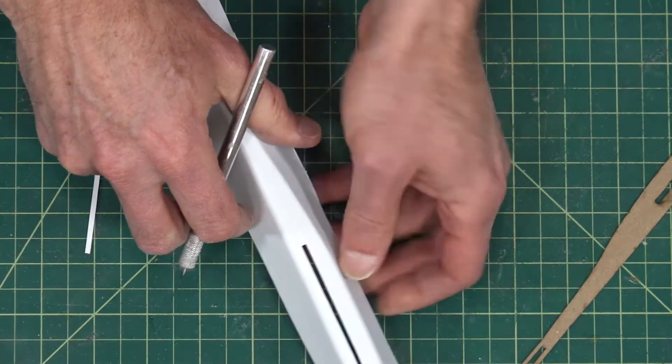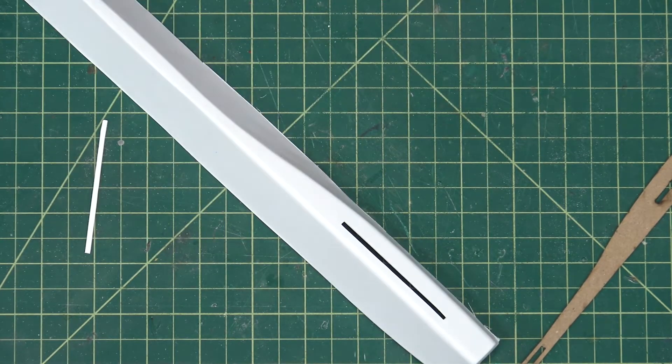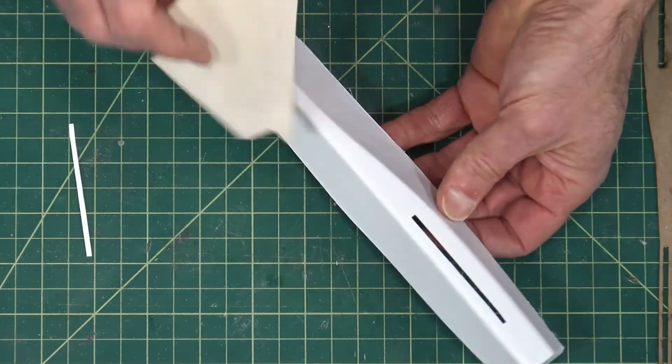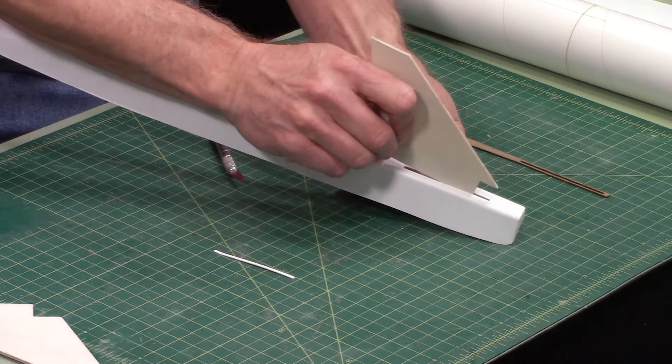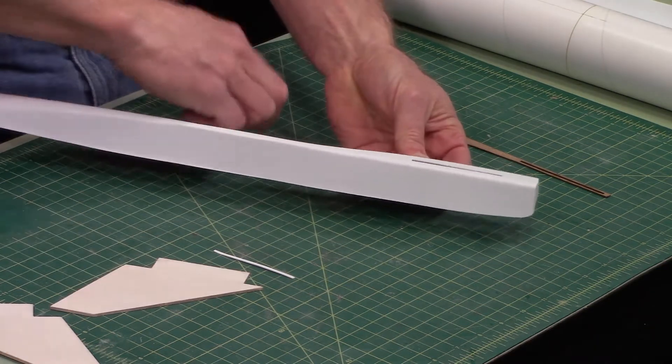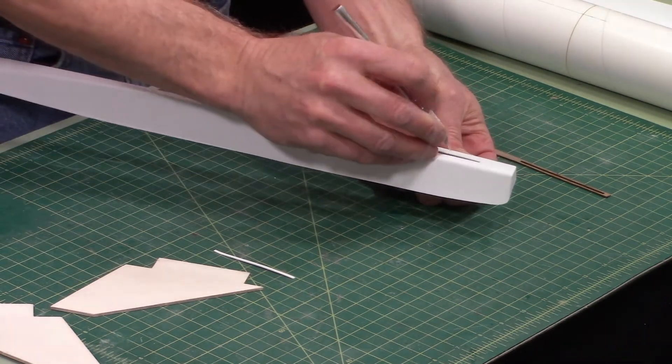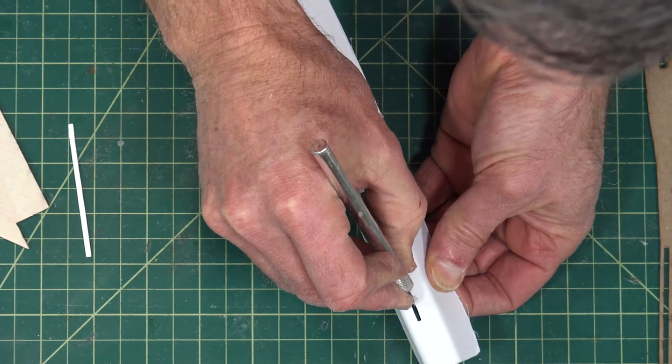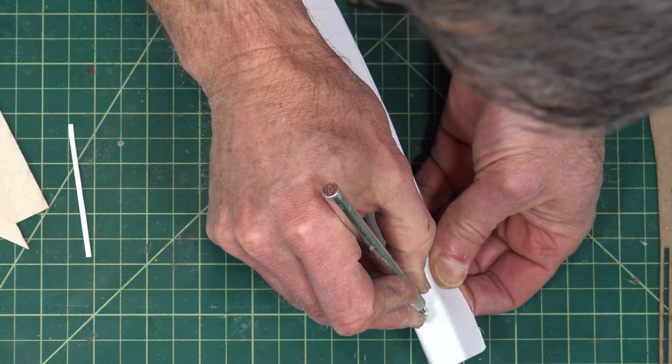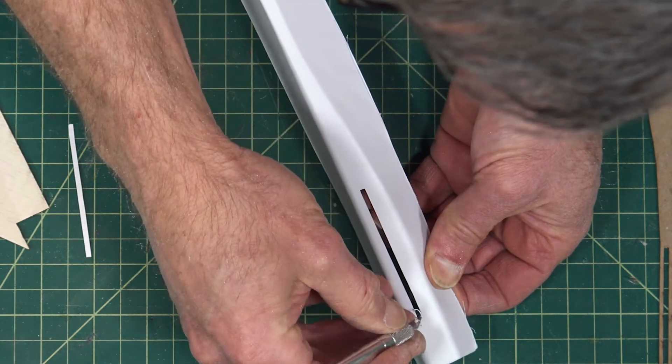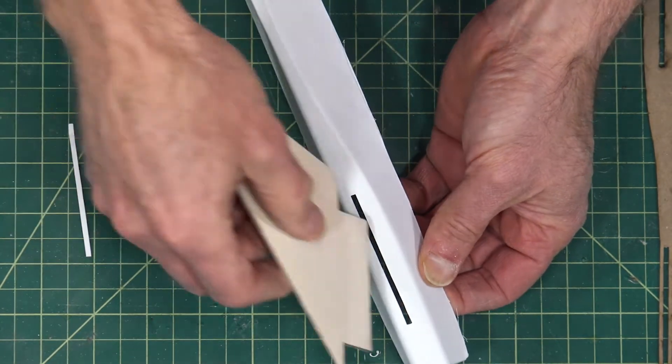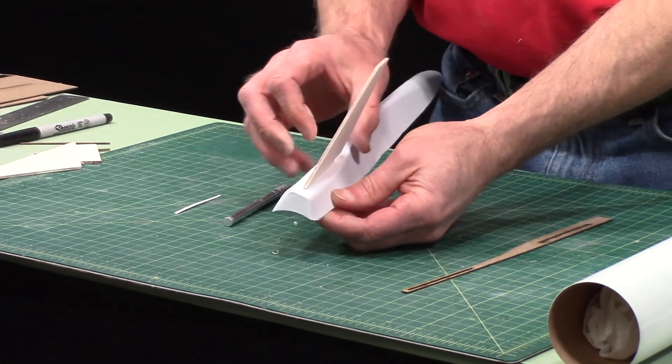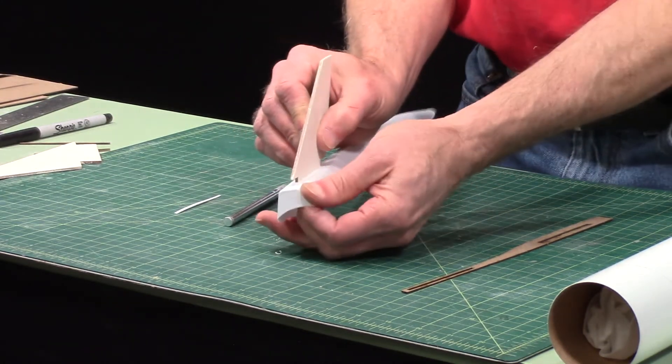We want to make sure that these slots are wide enough for the fins. Let me grab a fin here. So you'll want to test fit it. And if it's too narrow, you'll want to take your knife and kind of trim along those edges where it is catching and not going all the way through. Okay, so that's good. That one fits.